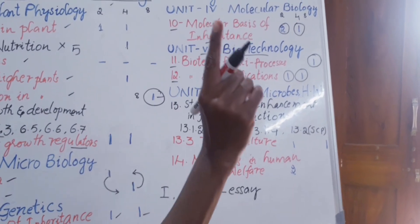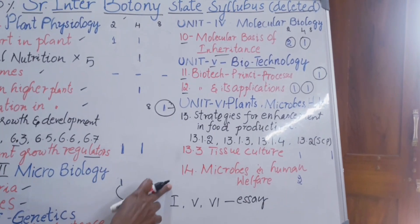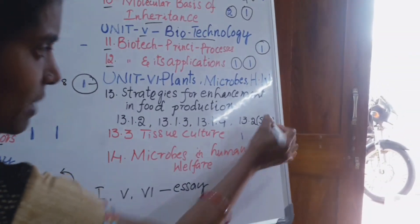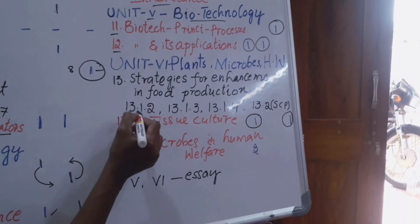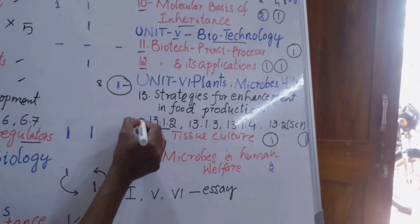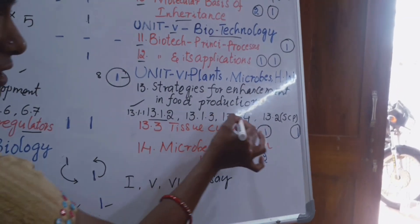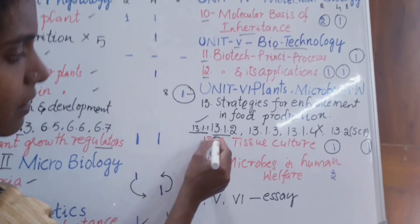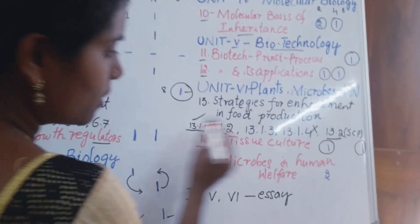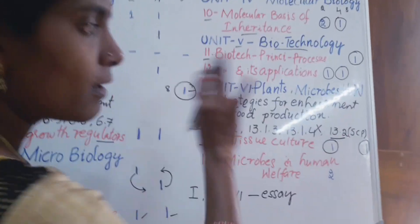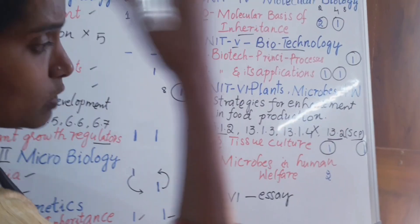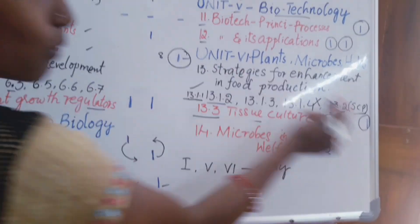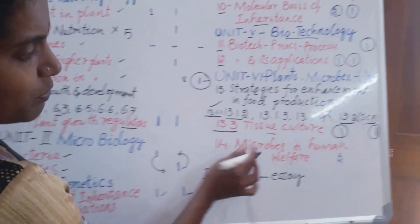Coming to unit six, Plants, Microbes and Human Welfare. There are two chapters — 13 and 14. In chapter 13, sections 13.1.2, 13.1.3, and 13.1.4 are deleted. Only sections 13.1.1 and 13.3 are retained. Section 13.2, Single Cell Protein, is also deleted. So from chapter 13, only Tissue Culture and section 13.1.1 remain — one very short answer and one essay question will come. Chapter 14, Microbes in Human Welfare, carries two-mark questions.